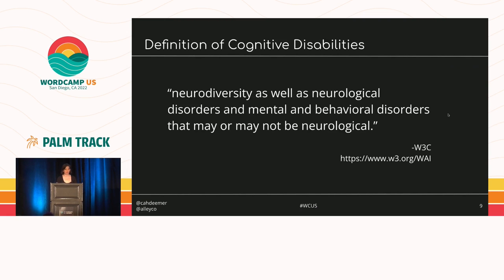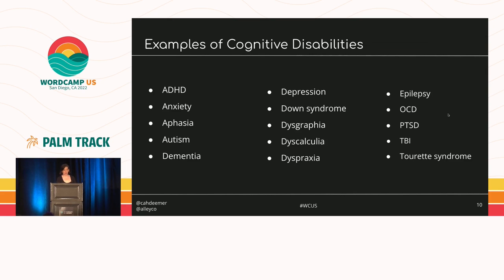We're going to use the W3C's definition of cognitive disabilities for this talk. It's a very nebulous, umbrella term covering neurodiversity as well as neurological disorders and mental and behavioral disorders that may or may not be neurological. That includes a wide variety of things: ADHD, anxiety, aphasia, autism, dementia, depression, Down syndrome, dyspraxia, epilepsy, traumatic brain injury, Tourette syndrome, and so many more.